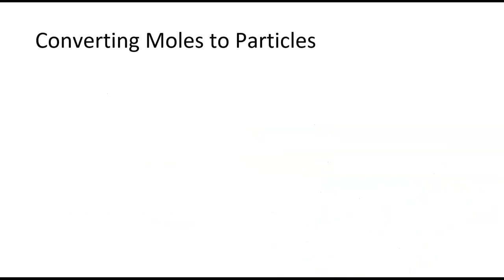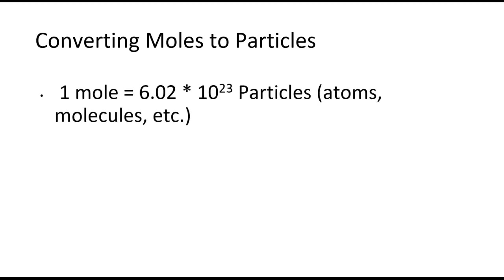Let's take a look at how we use Avogadro's number to convert between moles and particles. We start with our relationship: one mole is equal to 6.02 times 10 to the 23rd particles. That particle could be atoms, molecules, anything really — if there were that many cars, it could be cars, it could be eggs. Just like you can talk about a dozen of anything.